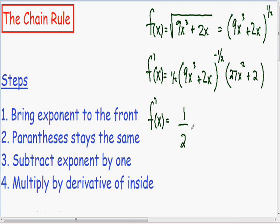It's always improper to leave a negative exponent in your final answer. So if you remember from algebra, a negative exponent in your numerator is a positive exponent in your denominator. So 9x cubed plus 2x to the negative one-half in the numerator is going to be the same as 9x cubed plus 2x with a positive one-half exponent in the denominator.